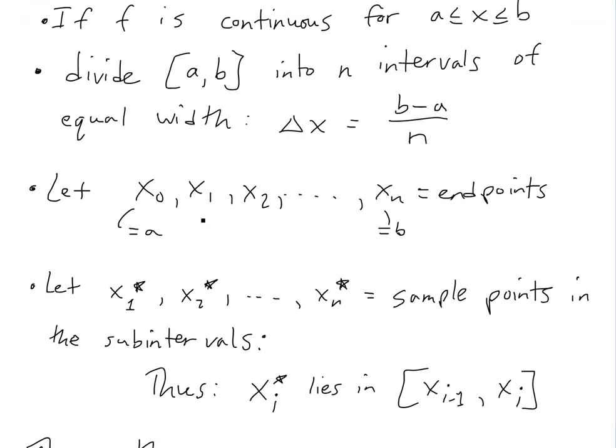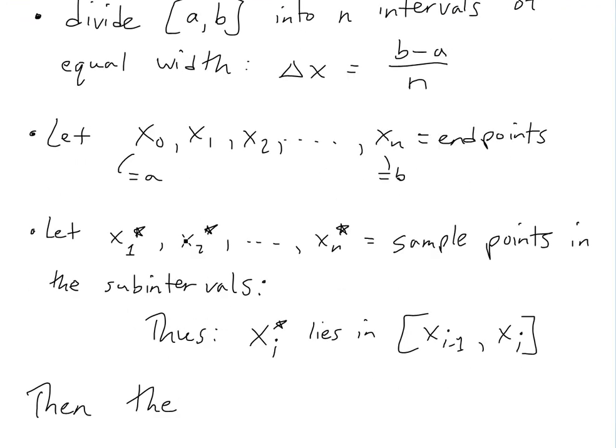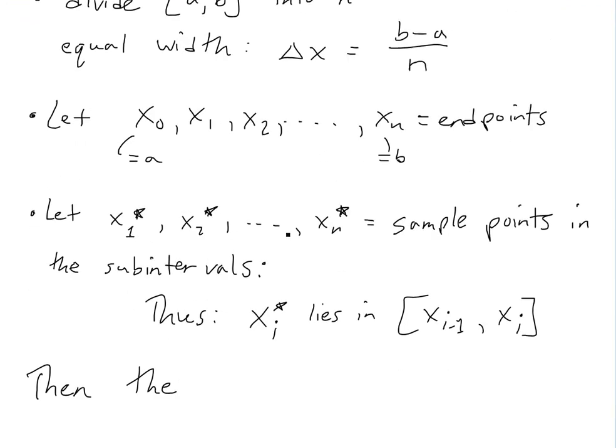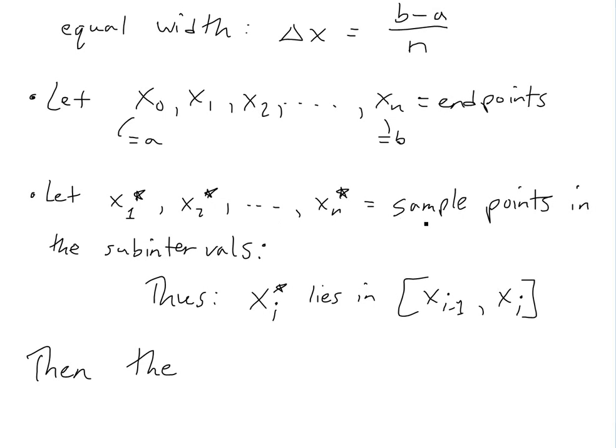In this case, then, if we let x_0, x_1, x_2, etc., be the n points, all the way to x_n. Remember, x_0 is a, and x_n is b. Then we also let x_1*, x_2*, etc., all the way to x_n*,